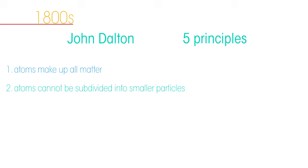The next leap forward in our understanding of atoms came in the 1800s. A man called John Dalton concluded five main things from experiments he had been doing. One: atoms make up all matter. Two: atoms cannot be subdivided into smaller particles.